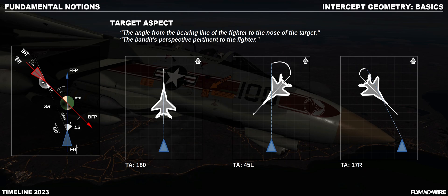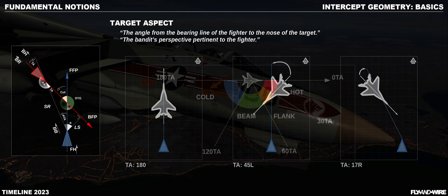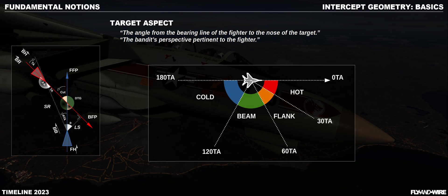The sketches provide some examples. If the bandit shows its exhausts, then the target aspect is 180 degrees. Following the arrow, we can find the sign of the aspect, similar to the ATA — it is either left or right. Note that if you imagine rotating the sketch until the BFP and the FFP superimpose, both ATA and TA become 0.